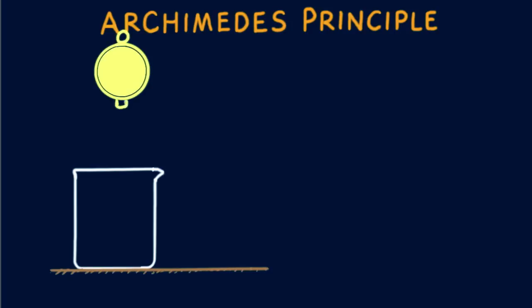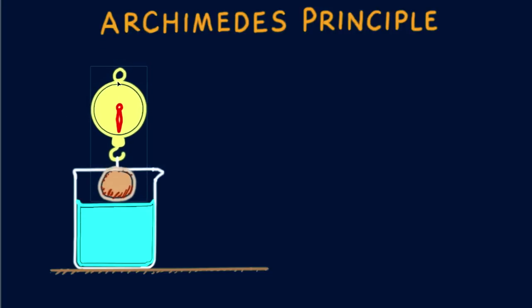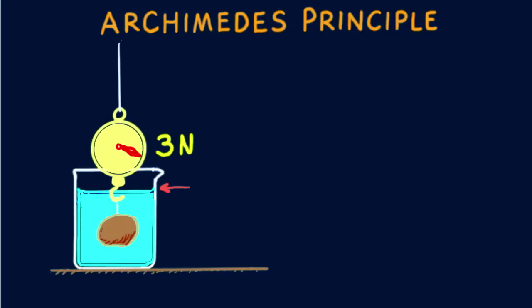Here's a glass beaker on a table beneath a stone that is suspended by a string attached to a weighing scale. The weight of the stone is 5 Newtons.